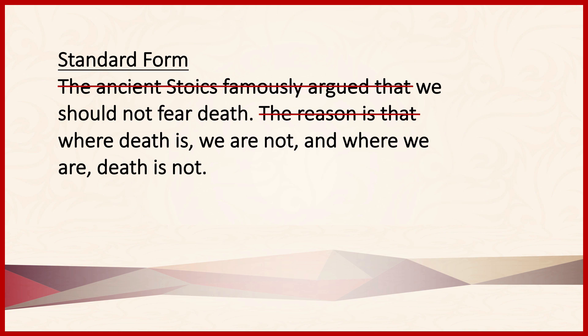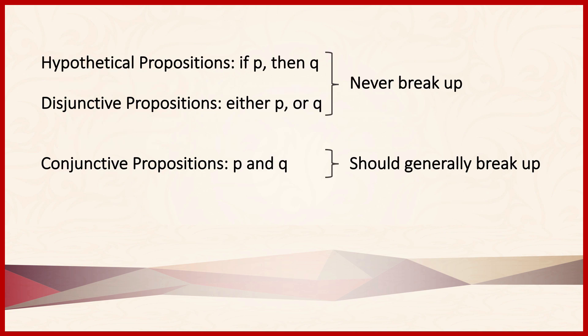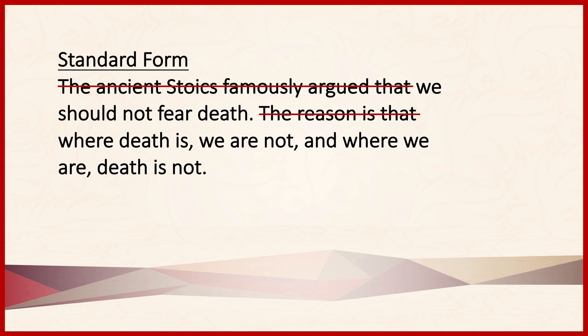Note that this passage contains a special proposition, as indicated by the word 'and.' Recall from section 1.1 there are three types of propositions that commonly appear in arguments: hypothetical propositions, disjunctive propositions, and conjunctive propositions. When you find the first two of these in passages, we never break them up. Conjunctive propositions, however, generally should be broken up. The last sentence — 'where death is, we are not, and where we are, death is not' — is a conjunctive proposition, and what appears on both sides of the 'and' expresses something very different, so this should be broken up with the premises listed separately.